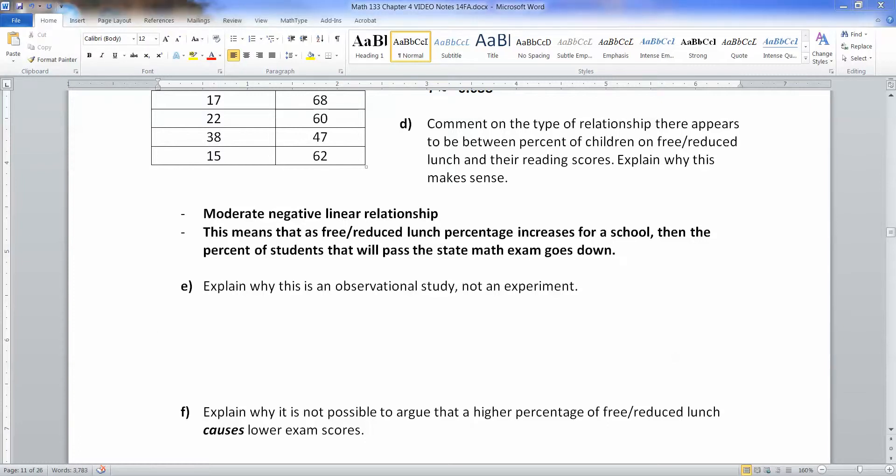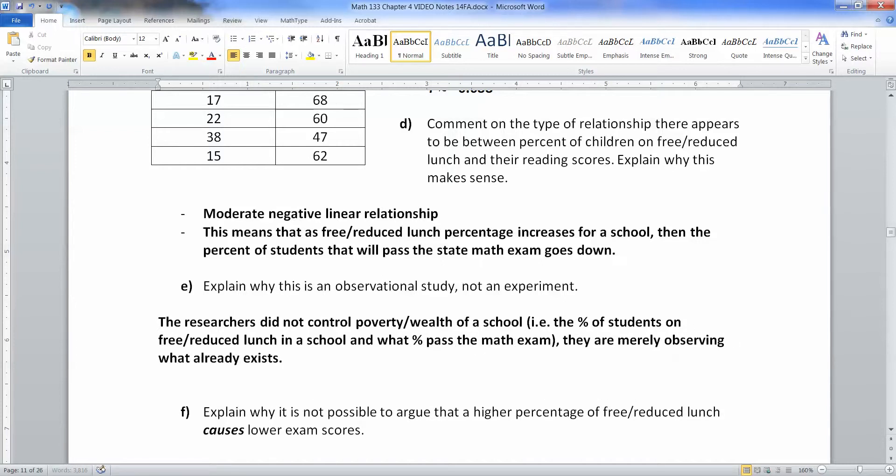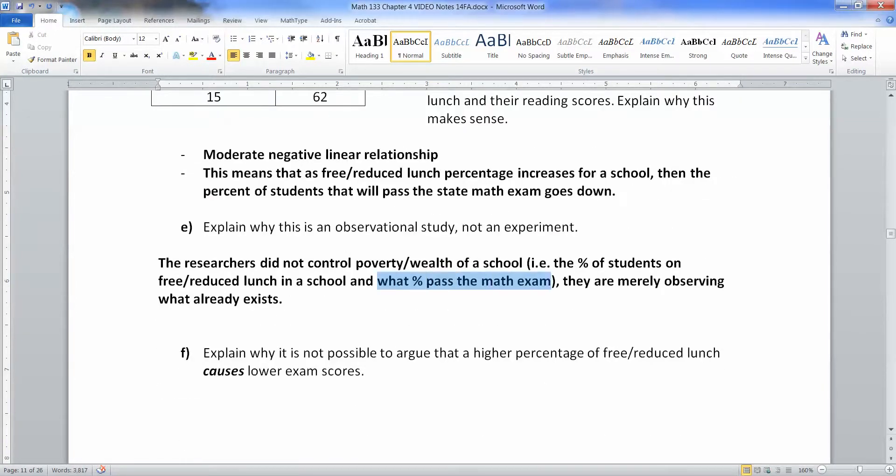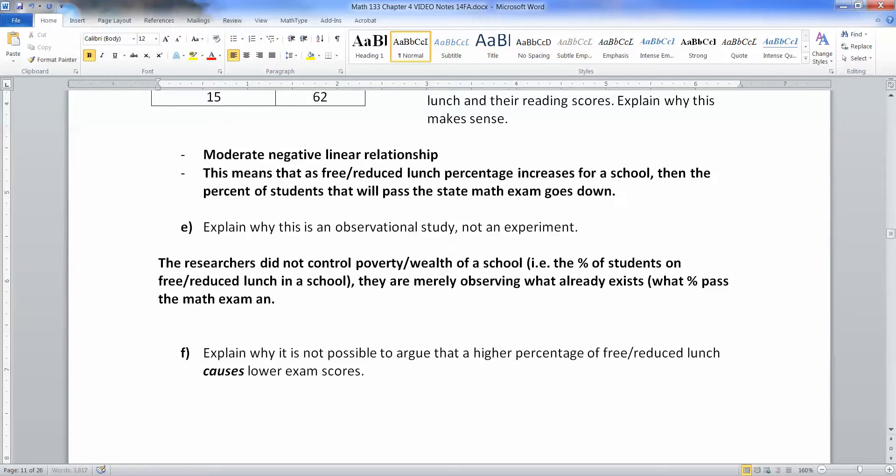Why is this observational, not an experiment? Well, for a variety of reasons, but one of them is that the researchers did not control the poverty and wealth of the school. They just walk into a school and observe what percentage have free reduced lunch and what percentage pass the math exam. They're merely observing what already exists. They didn't say 'you, child A, we're gonna make you have free lunch.' They just came in and observed - does child A have free lunch, did they pass their math test? That kind of thing. They're just observing what already occurs.